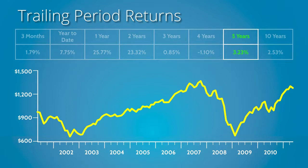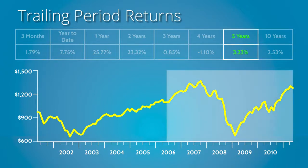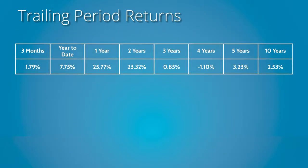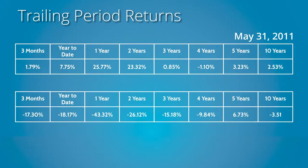How readily apparent is it from looking at trailing period returns of this fund that, within that five-year period, the S&P 500 declined by nearly 51% over 16 months, or that over the next 27 months the fund had not yet recouped its losses? Not so apparent from the trailing period returns calculated as of May 31, 2011 — but it would have been apparent had you looked at those same trailing period returns calculated on February 28, 2009.